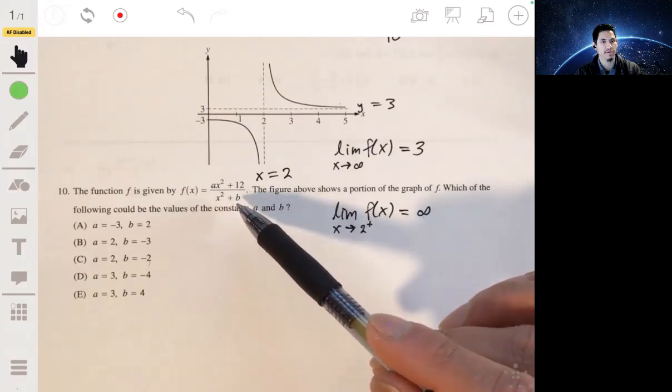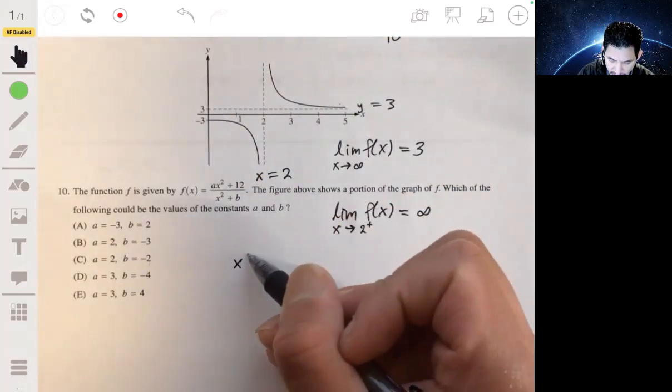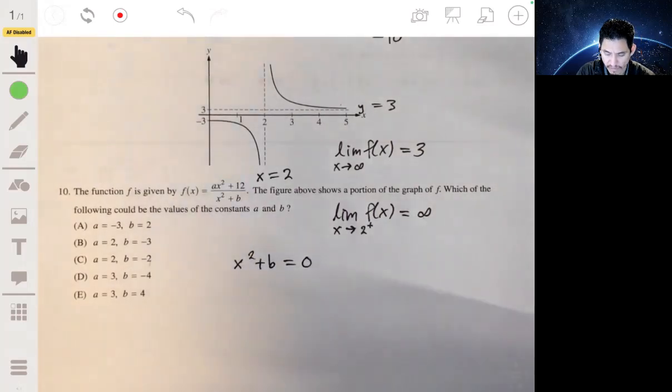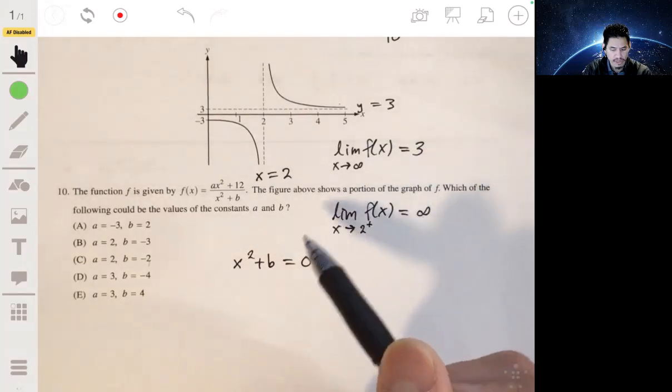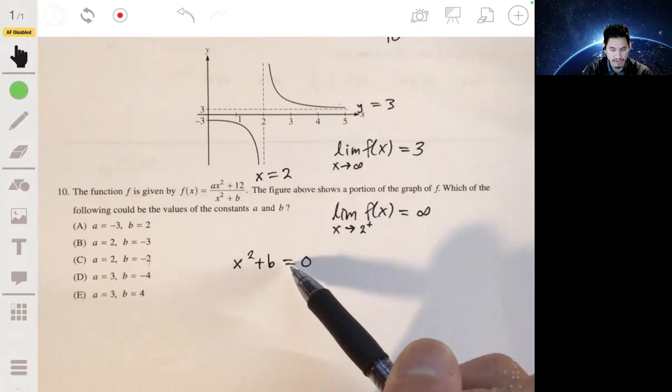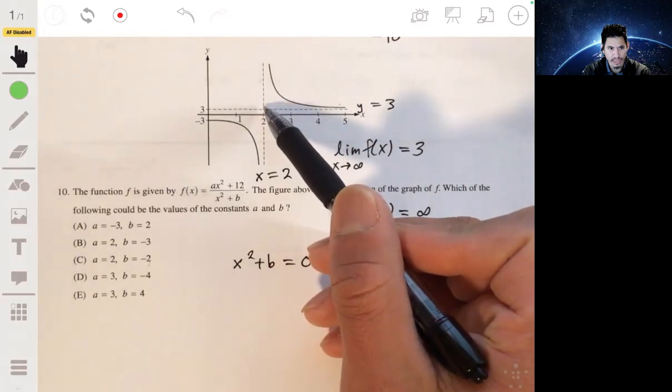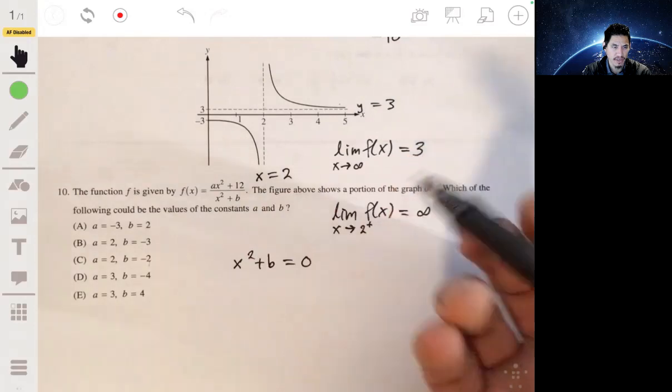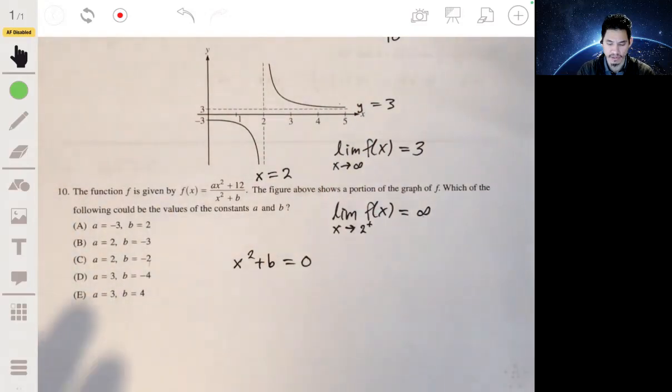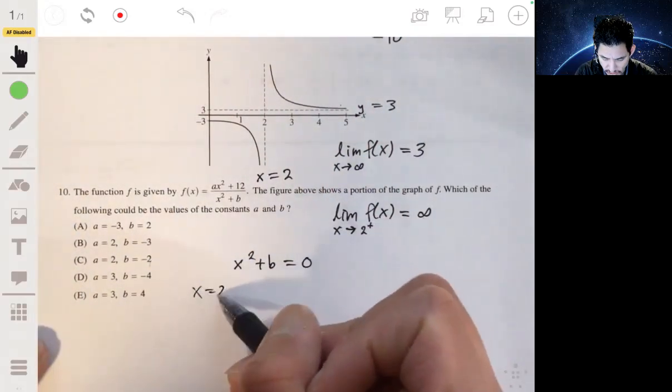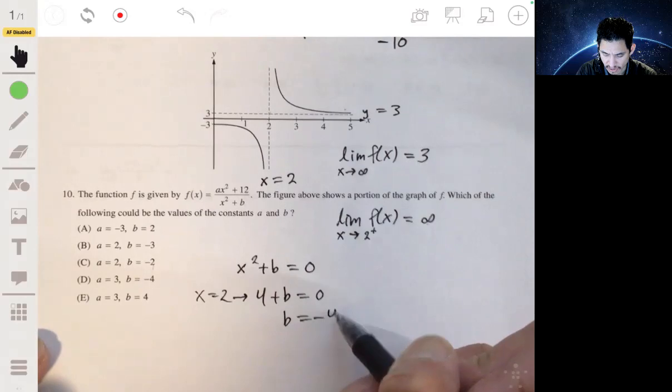So you're essentially just solving for when is the denominator equal to zero? Like when would it be undefined? So we can set x² plus b equal to zero. Now also, when it's equal to zero, this is when x will be two. Or you can say negative two doesn't actually matter. But that's the denominator being undefined goes with a vertical asymptote. So let's make x equals two, and then we get 4 plus b equal to zero. And then if you solve for b, it's negative four.